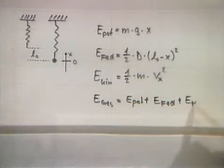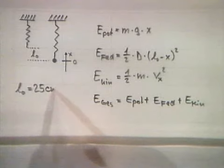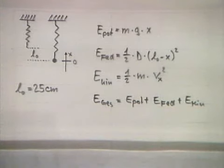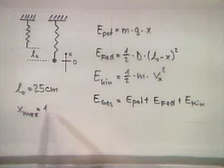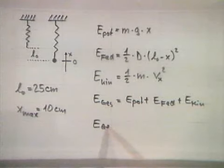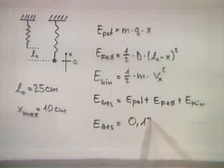Die Gesamtenergie ist die Summe aus allen drei Einzelenergien, plus der kinetischen Energie. Die Ruhelänge L₀ lässt sich messen – sie beträgt in unserem Fall 25 cm. Die Geschwindigkeit lässt sich schwierig messen, deshalb brauchen wir eine Situation, bei der wir die Geschwindigkeit genau kennen: das ist der untere oder obere Umkehrpunkt, wenn x gleich ±x_max ist. Die Geschwindigkeit ist dann 0, also ist die kinetische Energie auch 0. Wenn Sie für x_max zum Beispiel 10 cm wählen, bekommen Sie als Gesamtenergie den Wert von 0,12 Joule.